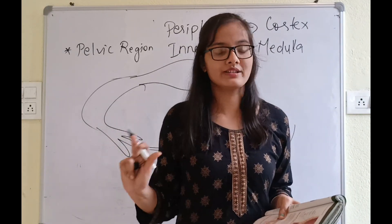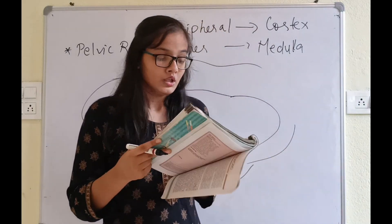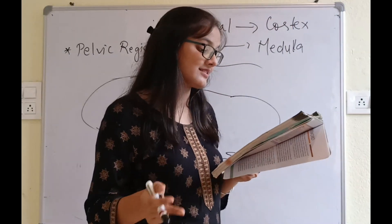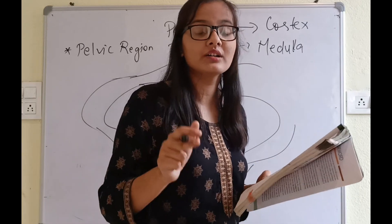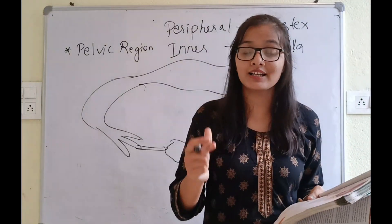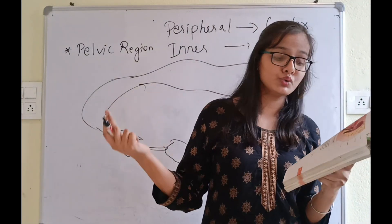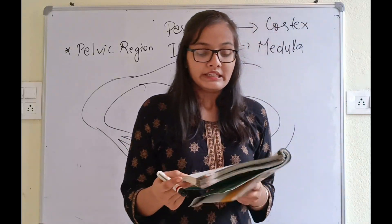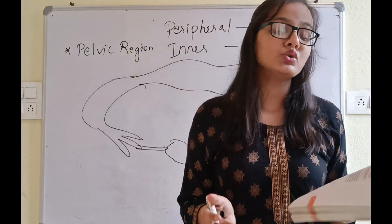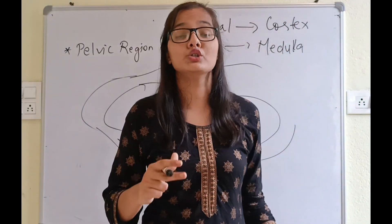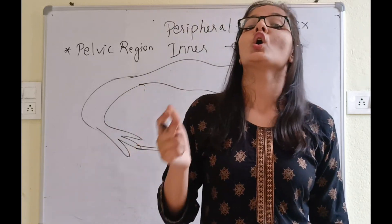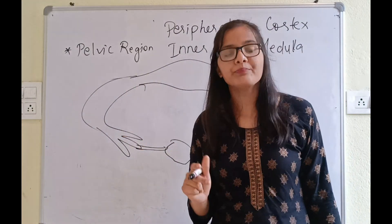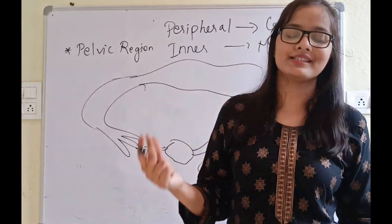The oviducts, fallopian tubes, uterus, and vagina constitute the female accessory ducts. In the accessory ducts we have: oviducts, fallopian tube, uterus, and vagina. Each fallopian tube is about 10-12 cm long. Ovary is 2-4 cm, and fallopian tube is 10-12 cm.